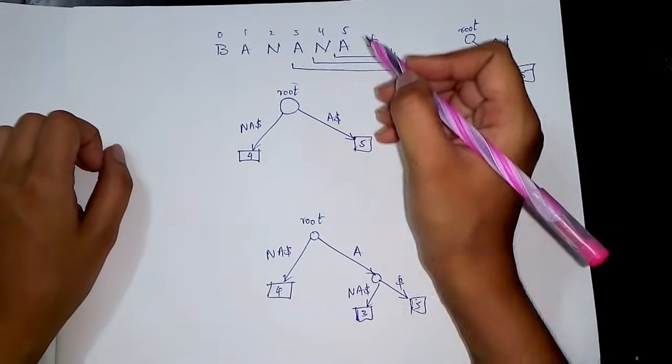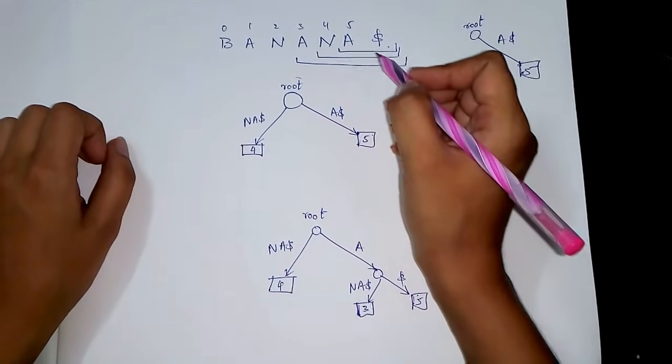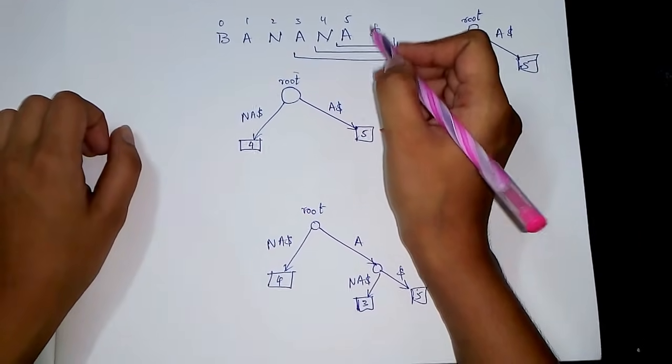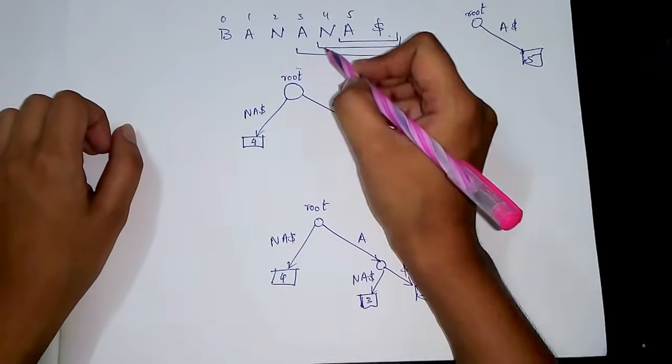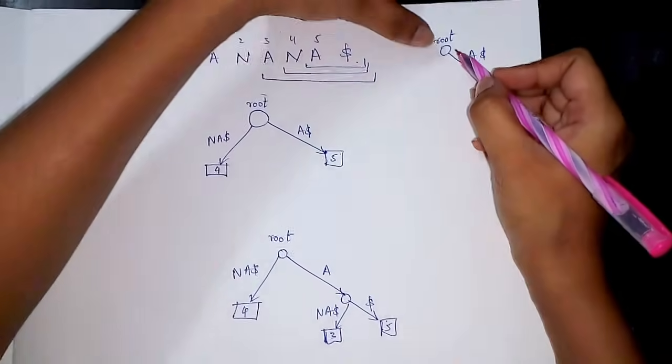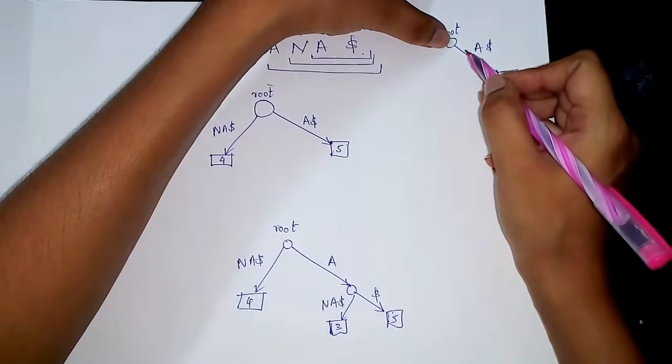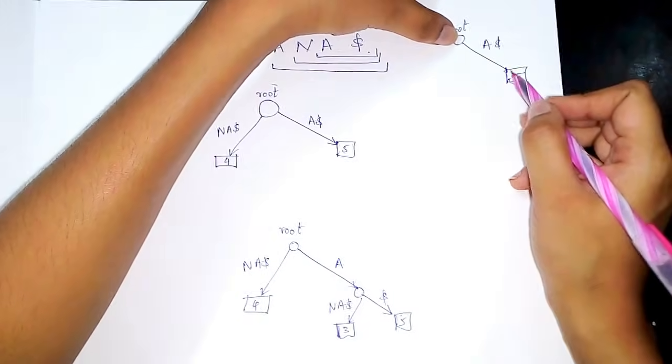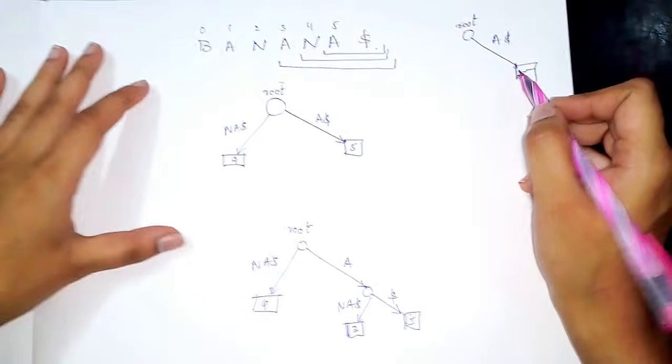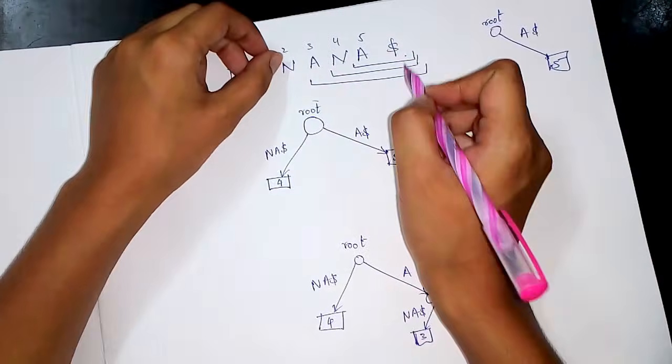While constructing a suffix tree, we always come from the least suffix, that is 'a', and we append the string with dollar as the suffix. This is how we construct: we take a root node, and since there is no branch starting with 'a', we directly take a node 'a$' with position 5, and then when we append...